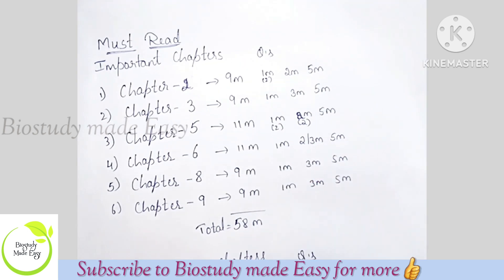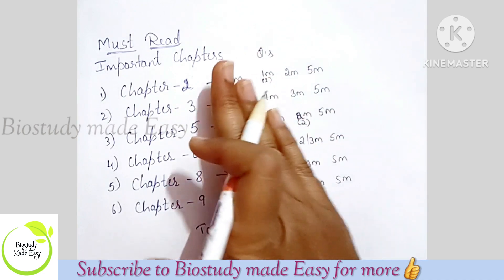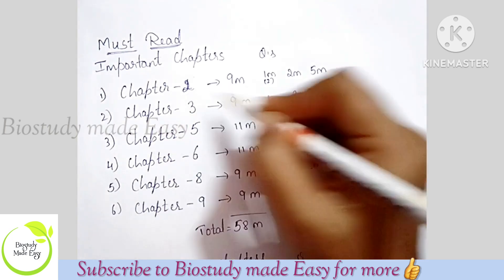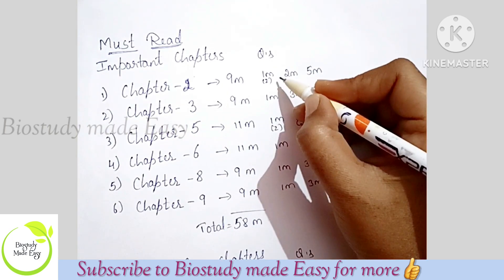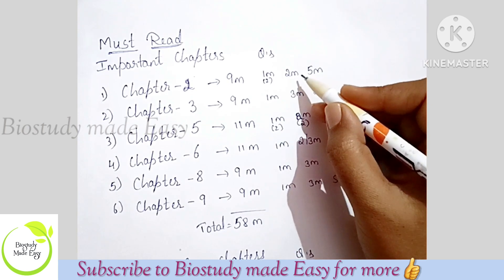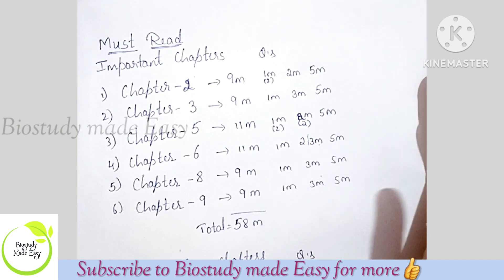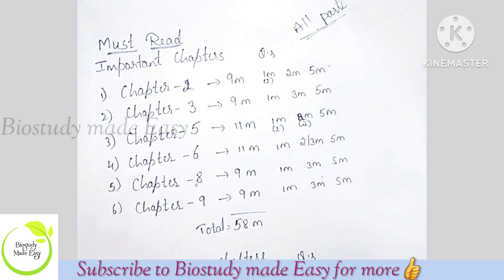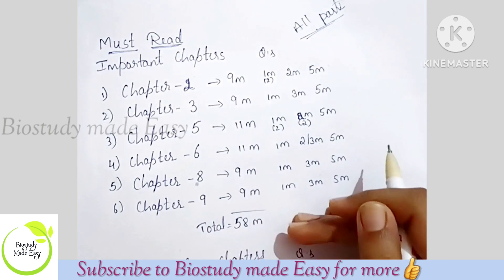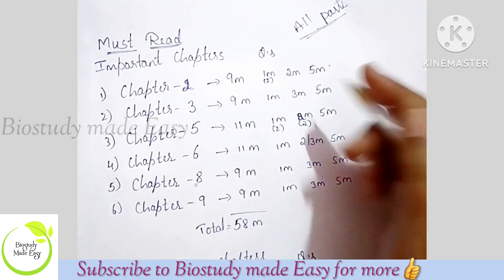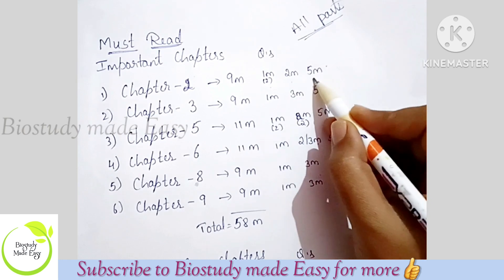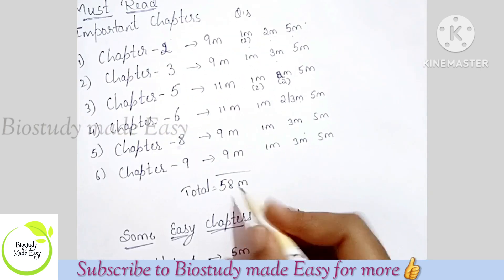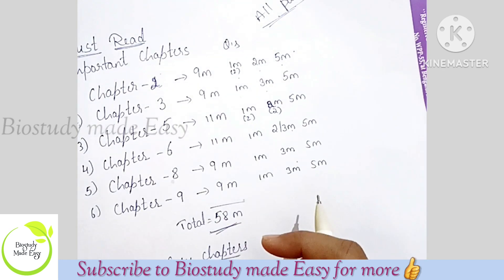These chapters are compulsory to cover. Because from these chapters, there are 1 mark, Part B, Part C — 3 marks questions, and Part D will also be covered. So all parts are going to be covered by reading these chapters. Chapter 3 will also have 1 mark and 3 mark and 5 mark questions. So from just these two chapters you have 58 marks total.